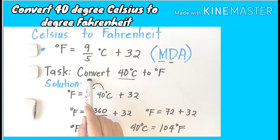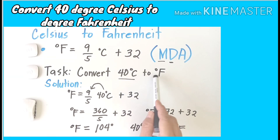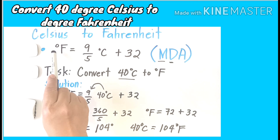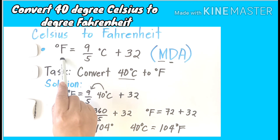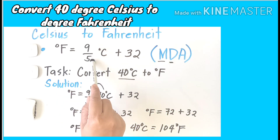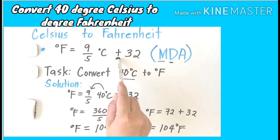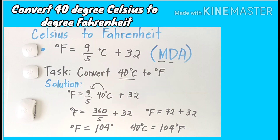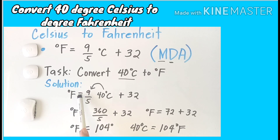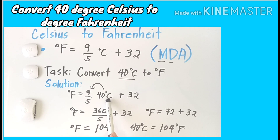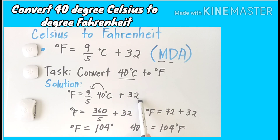We're going to convert 40 degrees Celsius to degree Fahrenheit using the formula: degree Fahrenheit equals 9 over 5 times degree Celsius plus 32. For the solution, as you can see, I've written the formula. Degree Fahrenheit equals 9 over 5 times 40 — that is the value of degree Celsius — plus 32.